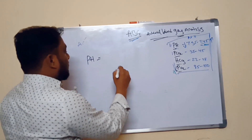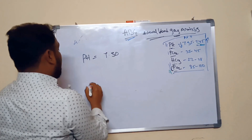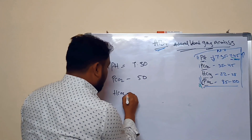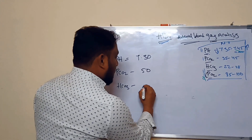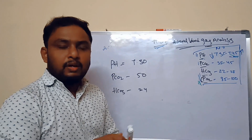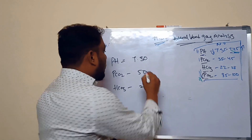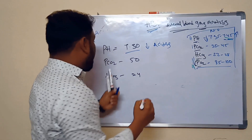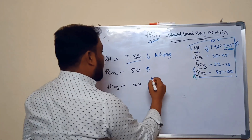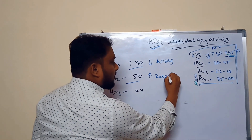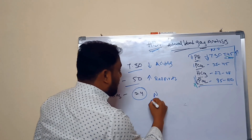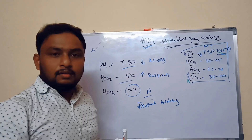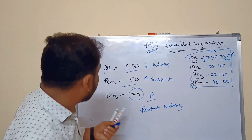Example three: pH is 7.30 — less than 7.35, so acidosis. PCO2 is 50 — more than 45, so it is increased. Bicarb is 24 — normal state. pH decreased, PCO2 increased — respiratory opposite — and bicarb is normal. So the diagnosis is respiratory acidosis.